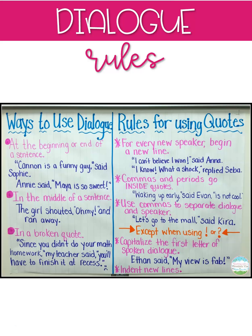Dialogue rules — ways to use dialogue. You can use it at the beginning or end of a sentence. For example: 'Canon is a funny guy,' said Sophie. And: Annie said, 'Maya is so sweet.' Notice how in the first example, the dialogue came at the beginning of the sentence, but in the second example, the dialogue came at the end. You can even use dialogue in the middle of a sentence, such as: The girl shouted, 'Oh my,' and ran away. The dialogue is right in the middle here.